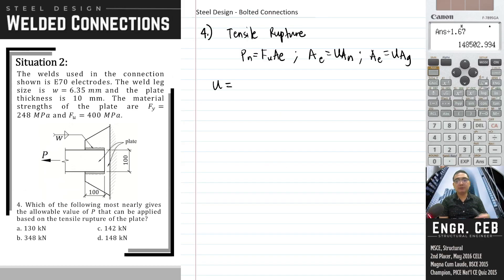We have U equals 3L squared over (3L squared plus W squared) times (1 minus X bar over L). The value of L based on the figure is 100. The value of W is also 100. How about X bar?